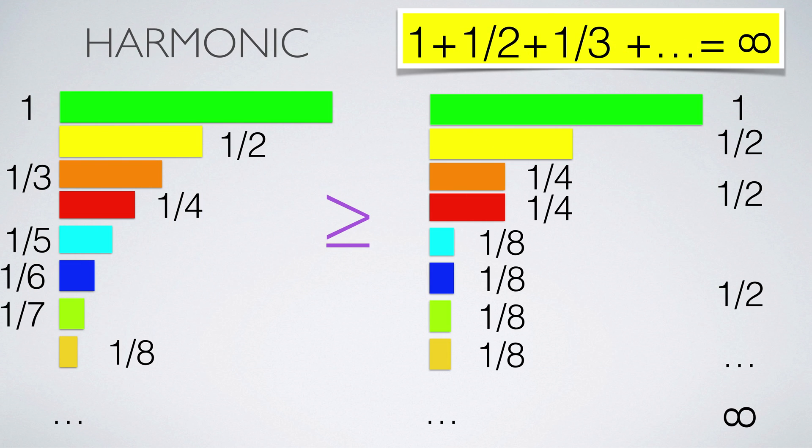Not all series do converge. The prototype of a sum which is not finite is the harmonic series. We can make the sum smaller by changing 1/3 to 1/4 and all terms 1/5, 1/6, and 1/7 to 1/8, etc. The next 7 terms will be lowered to 1/16. The terms can now be grouped to get 1/2 for each group.